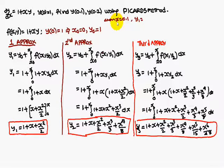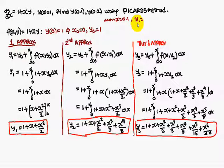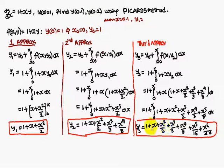When x is equal to 0.1, substitute into the expression to get the approximate value for y(0.1). Next, substitute x equal to 0.2 into the expression and you will get the approximate value for y(0.2).